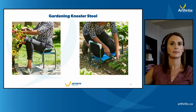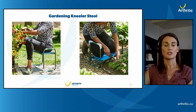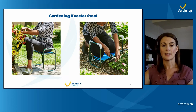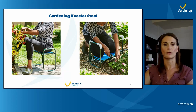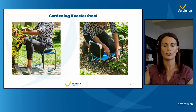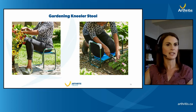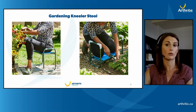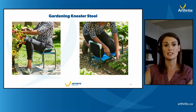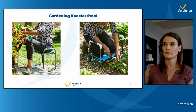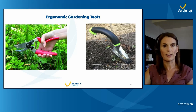A gardening kneeler stool is a really nice option for people with back, hip, or knee problems. You can flip it upside down and use it as a kneeling stool — it has a padded cushion for your knees, you're not all the way down on the ground, and it has hand bars you can use to push yourself back up. If kneeling is not a possibility, flip it the other way and it becomes a low stool you can sit on, still with hand bars to help you get back up.